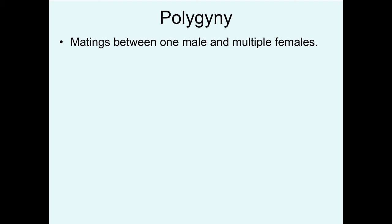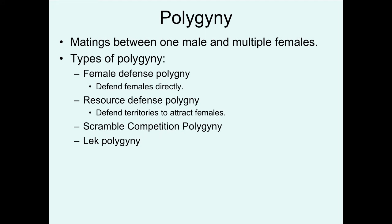The first type of polygamy we'll talk about is polygyny, meaning many females. This is where there are matings between one male and multiple females. There are various forms of polygyny. Female defense polygyny is where females are defended directly — normally gathered into preformed clusters that the dominant male can defend. In other cases, the male will defend a territory used to attract females, called resource defense polygyny.